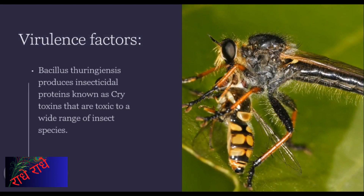B. thuringiensis is a soil bacterium that is widely utilized in agriculture for its ability to produce cry toxins, which are insecticidal proteins. These toxins have a toxicity range towards various insect species and have been demonstrated to be an effective pest deterrent through many years of its application.